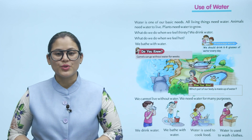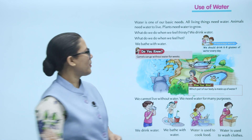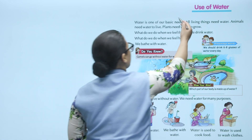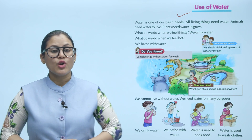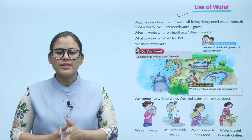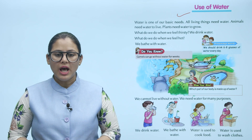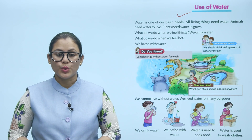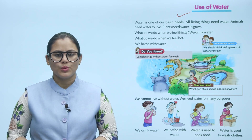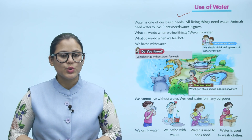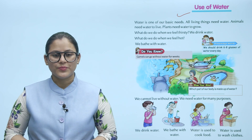Hello children, hope you are doing good. Let's start today's chapter: Uses of Water. Water is one of our basic needs. All living things need water — animals need water to live, plants need water to grow. What do we do when we feel thirsty? We drink water. What do we do when we feel hot? We bathe with water.